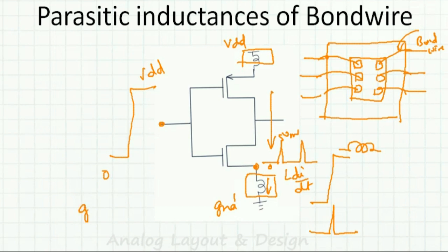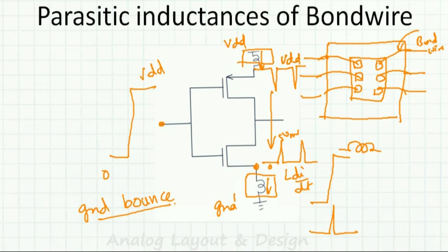A similar thing can happen with the power supply. The same spike current flows through the VDD bond wire inductance, causing the effective VDD seen on-chip to be lower than the actual supply by around 50 mV. This is called supply bounce.